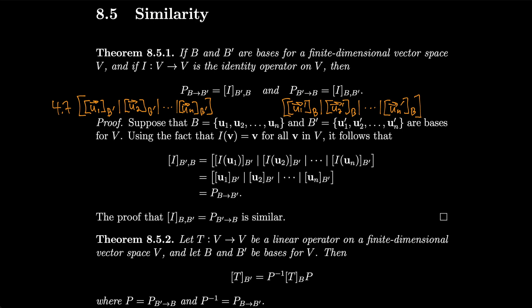Let's prove this. Suppose B is the basis U1 through U_N, and B prime is the basis U1 prime through U_N prime for V. Using the fact that the identity operator applied to any vector V equals V, it follows that I_{B'B} is defined as the matrix with columns I(U1)_{B'}, I(U2)_{B'}, through I(U_N)_{B'}. Since I applied to U1 is just U1, this is simply U1_{B'}, U2_{B'}, and so on — which by definition is P_{BB'}.